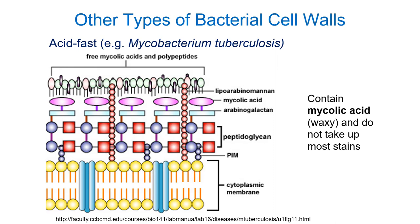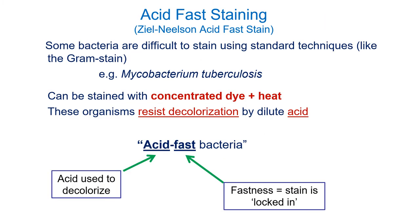Mycobacteria cells cannot be stained using gram staining because they have a layer of mycolic acid. The mycolic acid is waxy and hydrophobic — it repels dyes and they can't penetrate into the cell. So to identify these cells, we have to do something different: acid-fast staining.